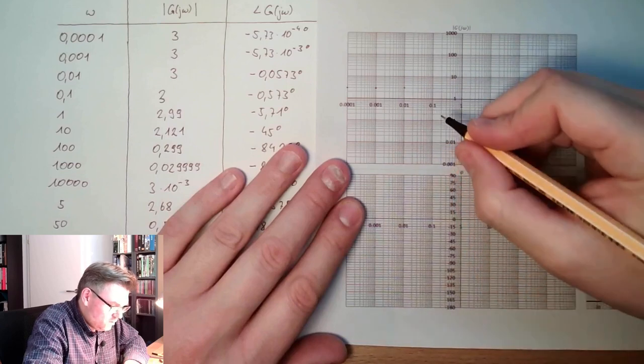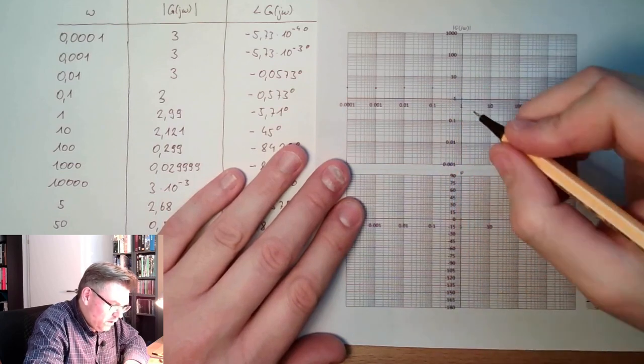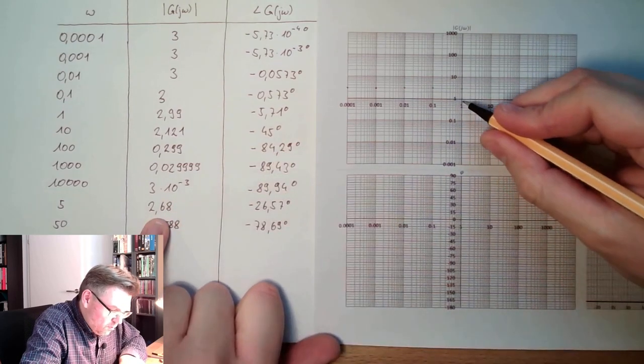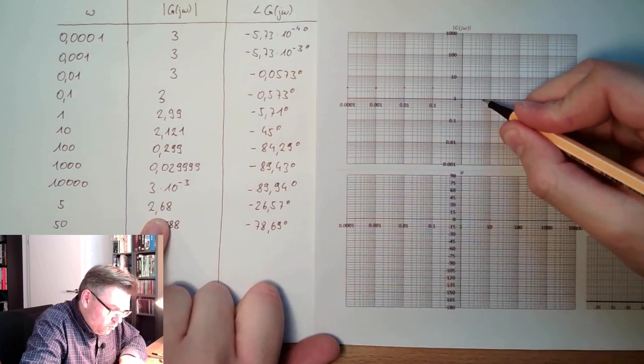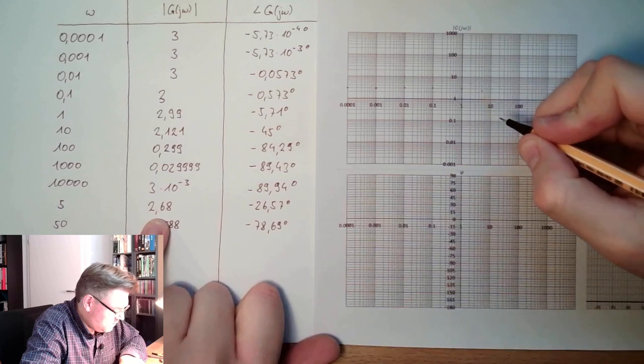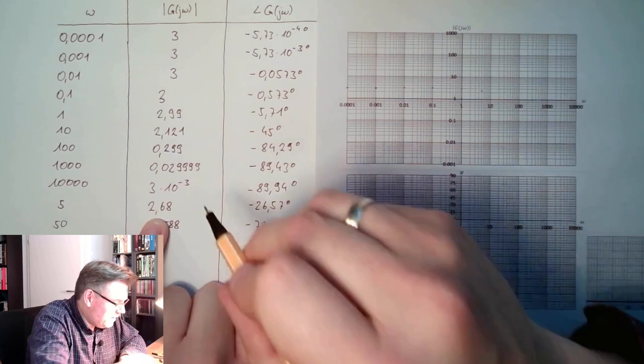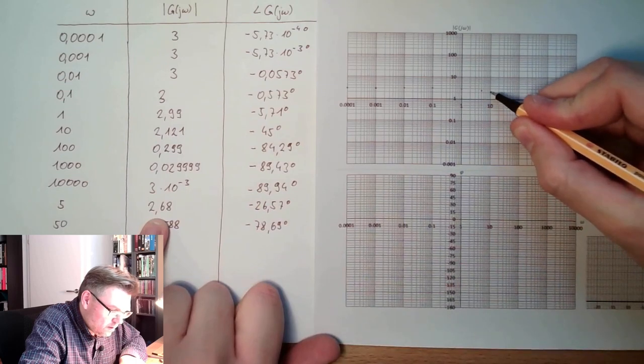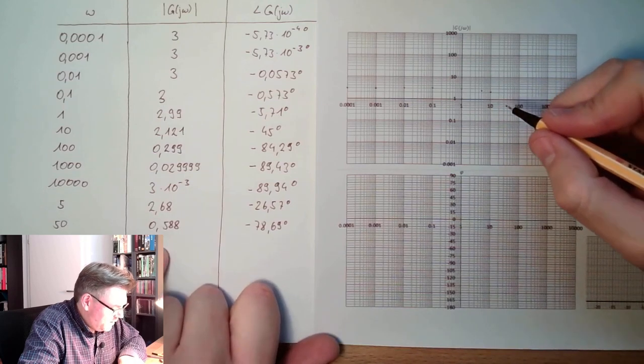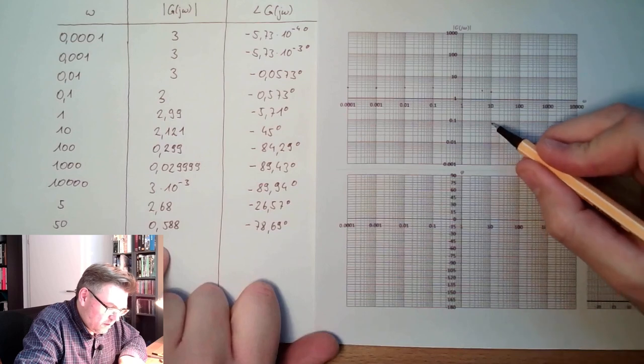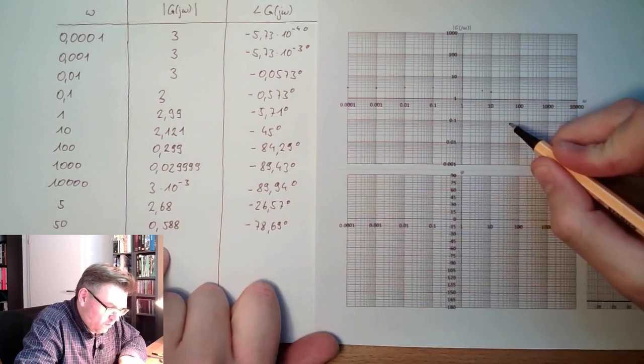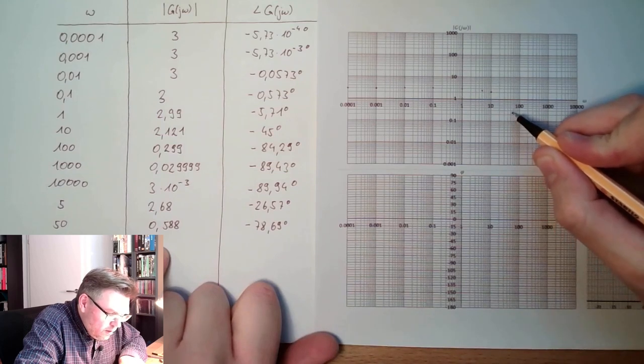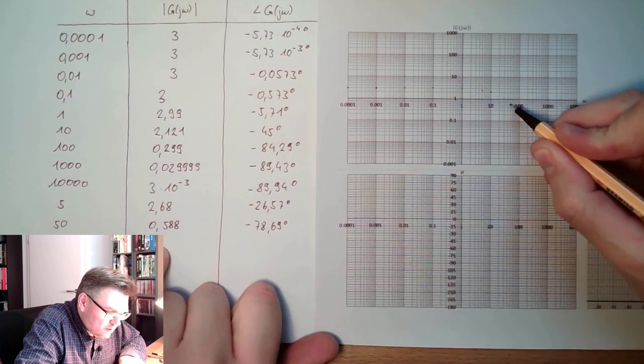At 1, I'm 2.99, so a little bit below. At 5, I'm 2.68, so here. At 10, I'm at 2.1, so a little bit here. At 50, I'm at 0.6 around, so here.